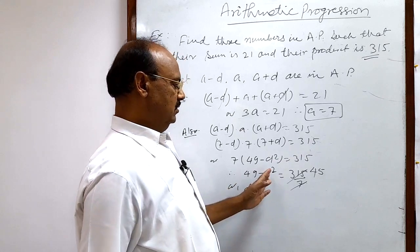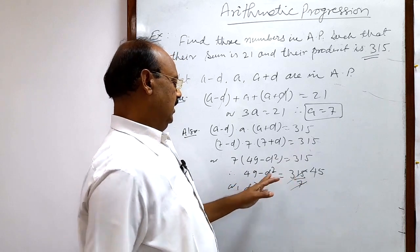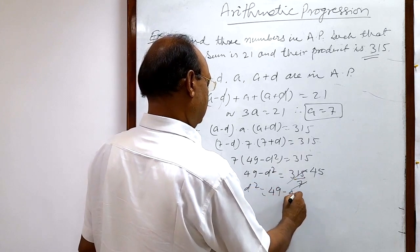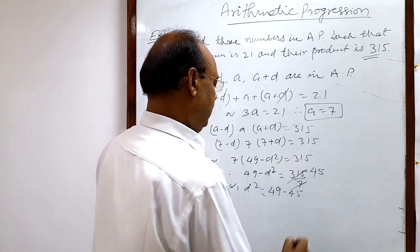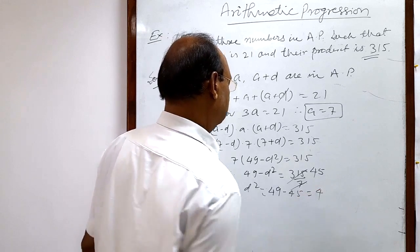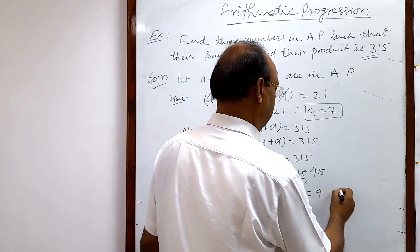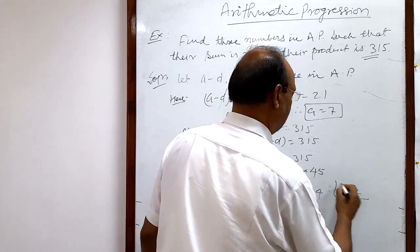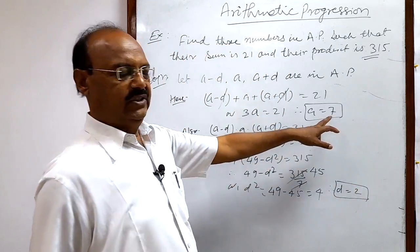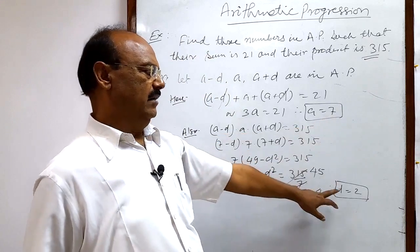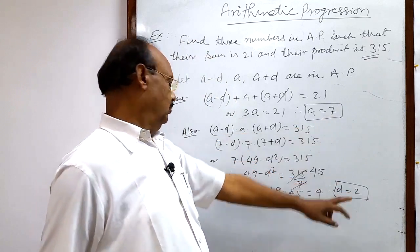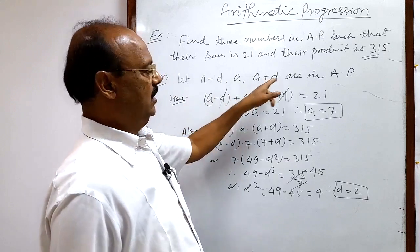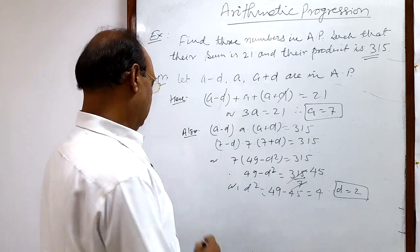Simplifying further: d squared equals 49 minus 45, which equals 4. Therefore d equals 2. So we now have a equals 7 and d equals 2, and we can find the three numbers a minus d, a, and a plus d very easily.